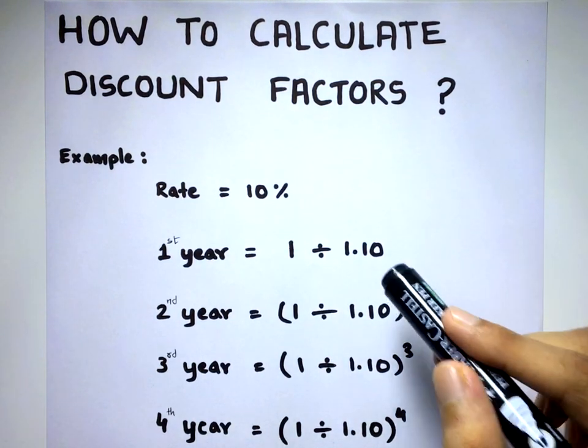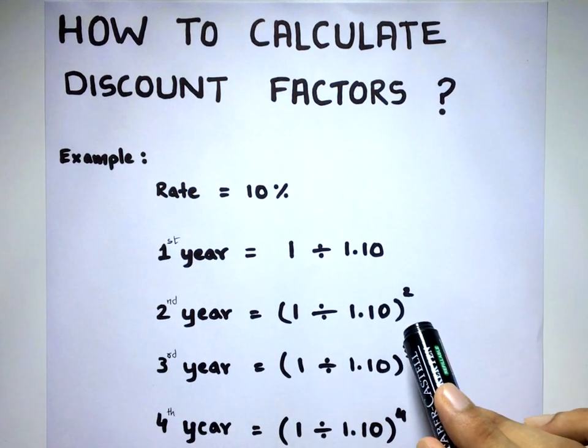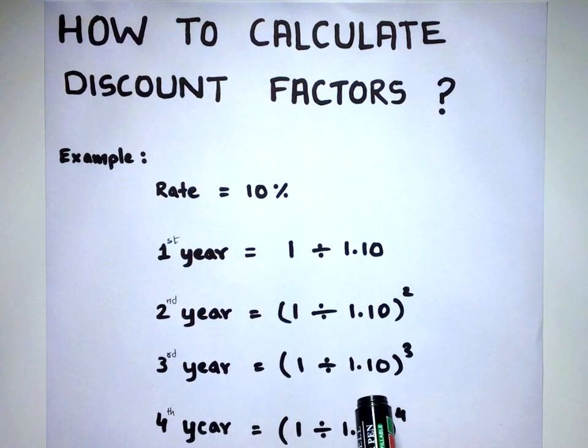And then you are going to keep raising the power. For second year, raise the power to 2. For the third year, raise the power to 3. For the fourth year, raise the power to 4.